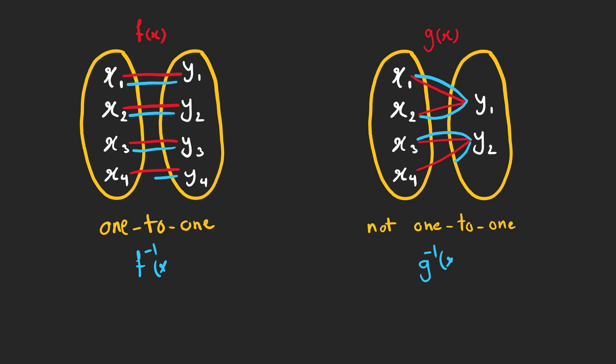The inverse of these functions is defined as an entity that gets y's as inputs and x's as outputs. The inverse of f of x is still a function because for every y we exactly have one x. But the inverse of g of x is not a function because there are elements that correspond to more than one output and therefore g of x inverse is not a function. So, a function has an inverse if and only if it has a one-to-one correspondence between its elements.